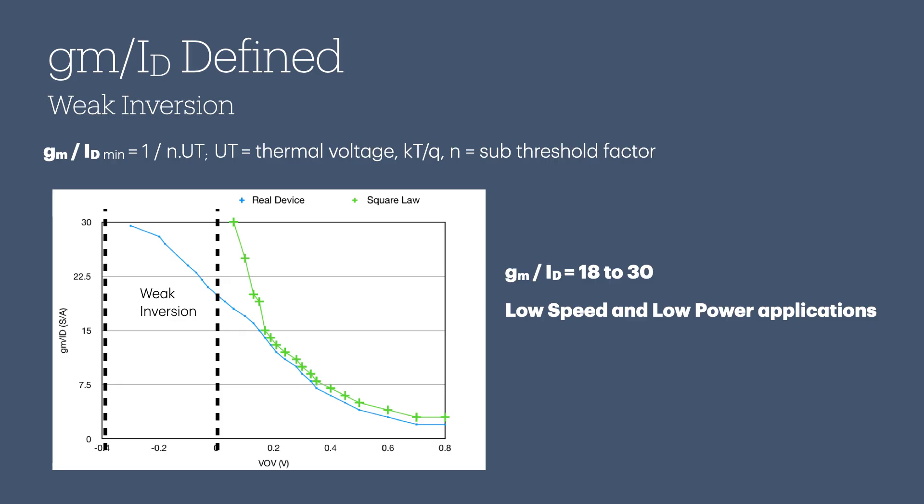Weak inversion happens when a transistor carries the smallest possible current. Weak inversion refers to the operating region of a MOSFET when its gate-to-source voltage (VGS) is below the threshold voltage VTH. In formulas, it's shown as 1 over N times UT, where UT is the thermal voltage and N is the sub-threshold factor. At such low current, charging the load capacitance takes more time, so this method isn't great if you need speed. The benefit? Lower current means lower power consumption. You'll find this operating region between the two dashed lines on the graph.